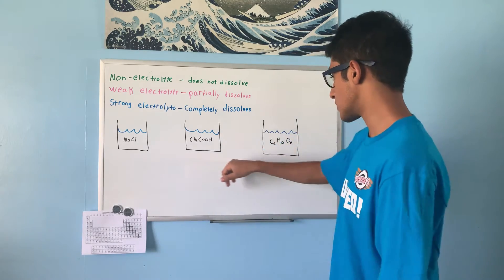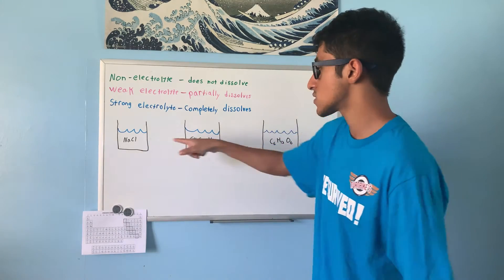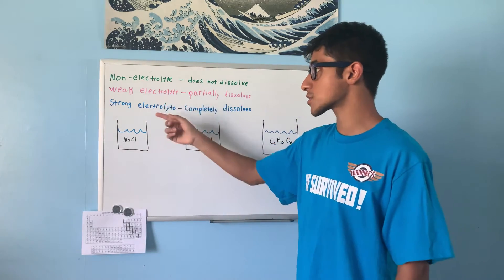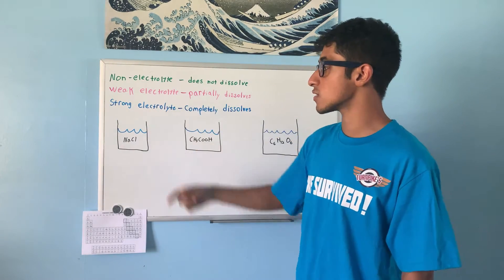So here, I have three different solutions with a different solute listed in the middle. We're going to identify whether each is a non-electrolyte, weak electrolyte, or strong electrolyte.